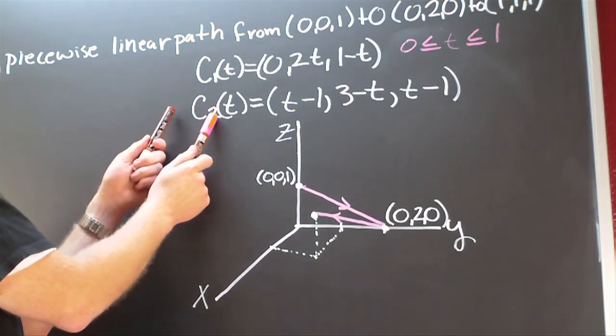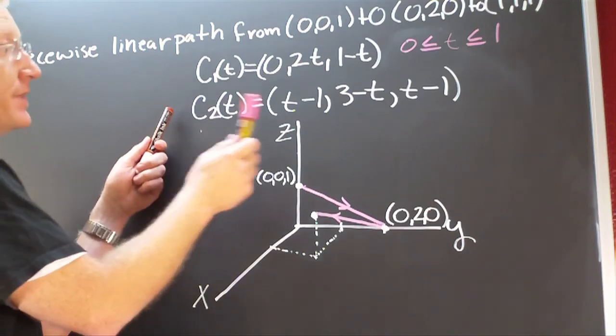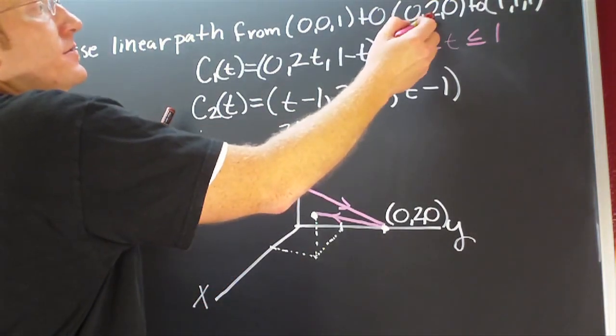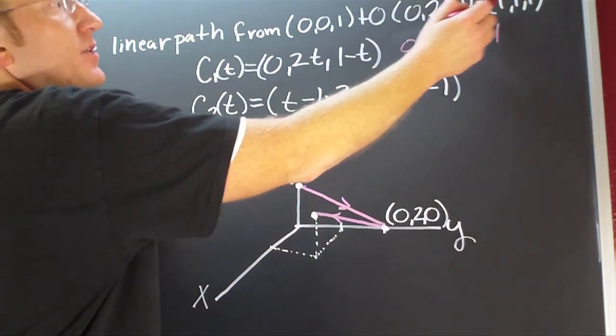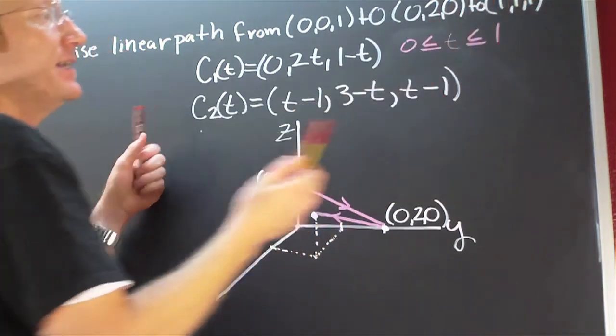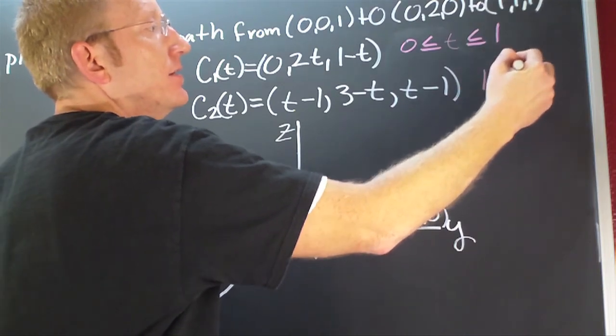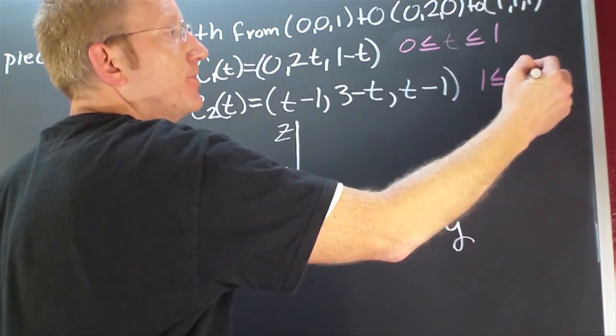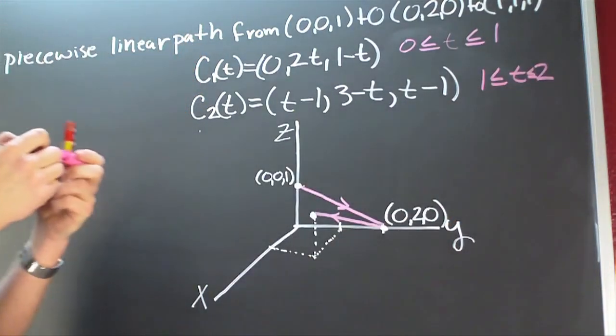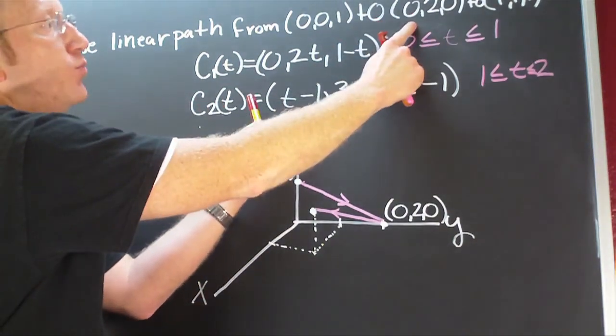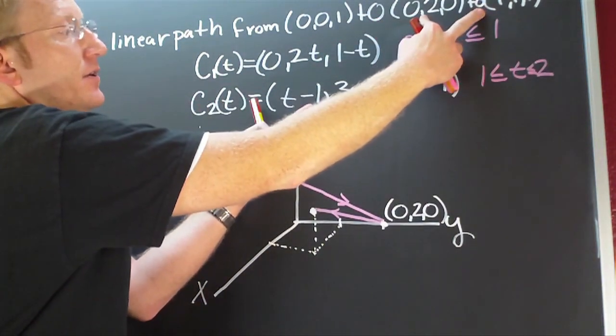Okay, so now I want to continue on my path and on the next one I want to go from (0,2,0) to (1,1,1) here in the time 1 to 2.